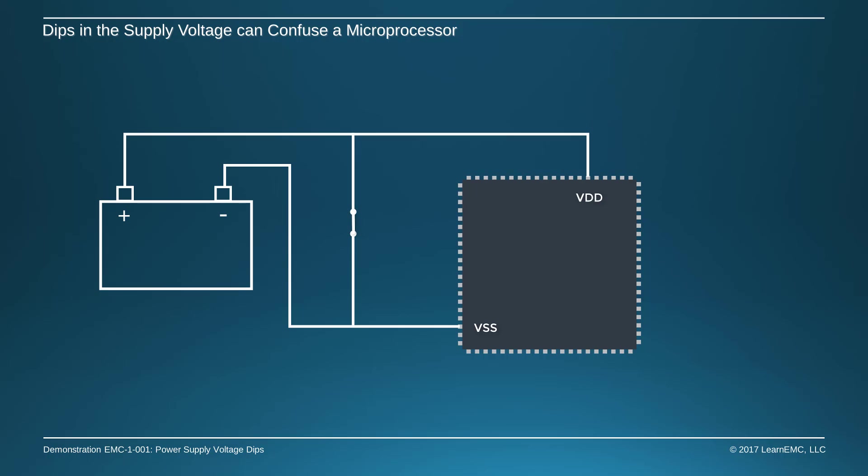If the supply voltage dips for a duration on the order of nanoseconds, there is generally enough internal power bus capacitance to keep the internal logic and memory from experiencing a significant voltage drop.